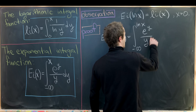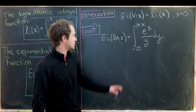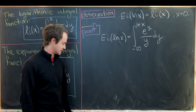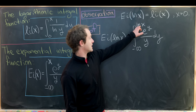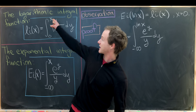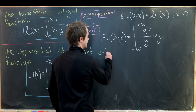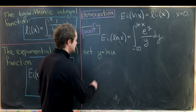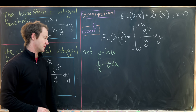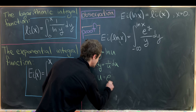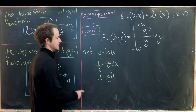Notice that our variable x is occurring in the bound of integration, which is why we put ln(x) in the upper bound. Now we perform a substitution — the natural choice is to set y equal to the natural log of u. That means dy equals 1/u du, and inverting gives u equals e^y.